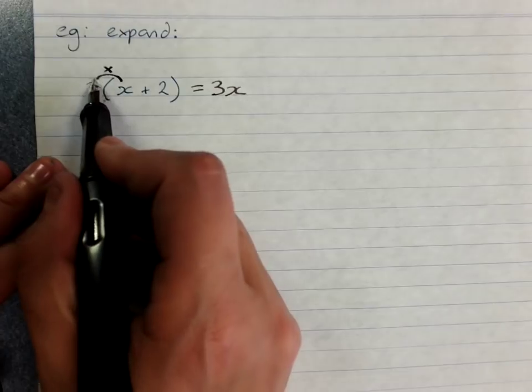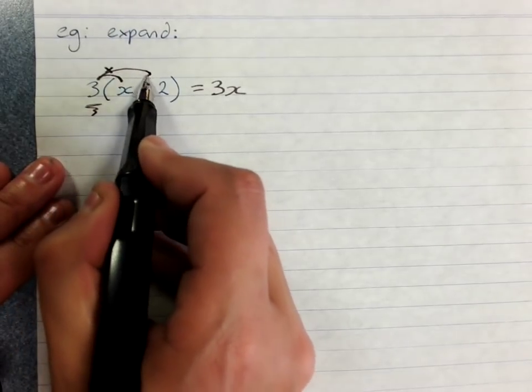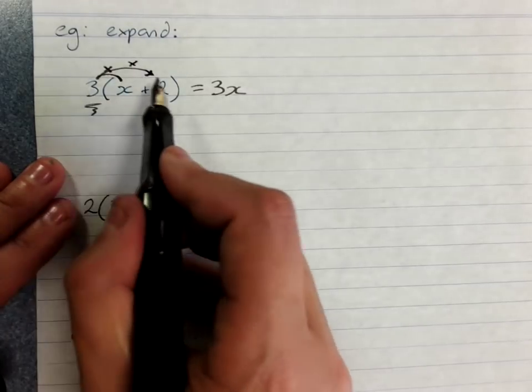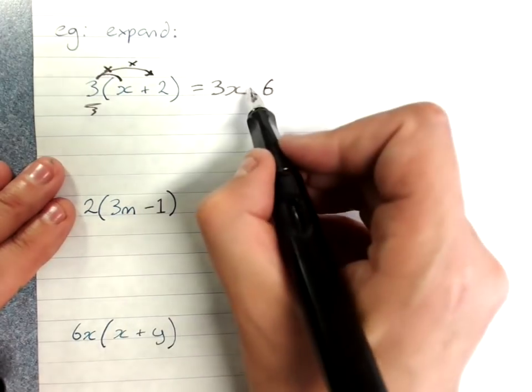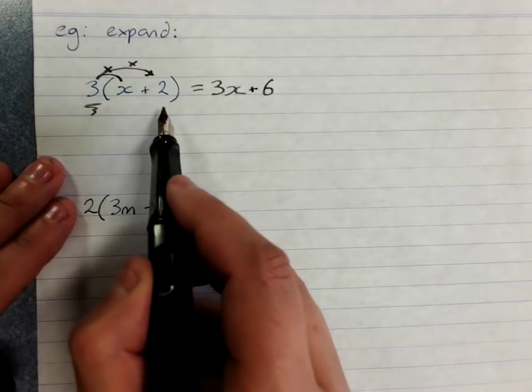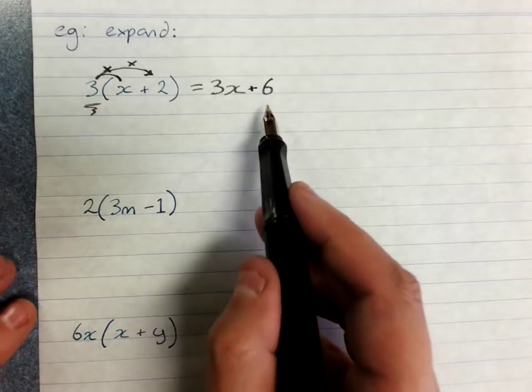Draw your arrow from the thing outside the front to the second term and multiply those together. 3 times 2 is 6, and because it's positive 6 we write a plus. 3 outside of x plus 2 equals 3x plus 6 when it's been expanded.